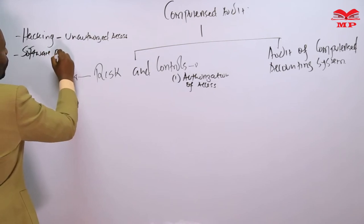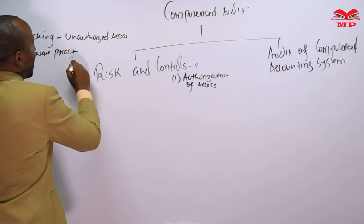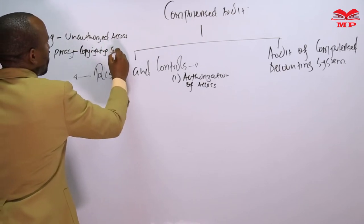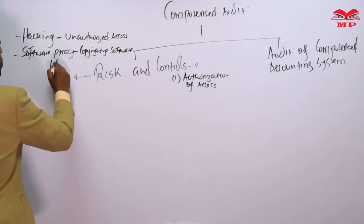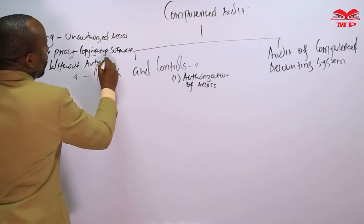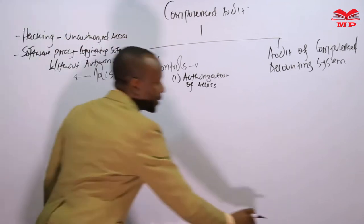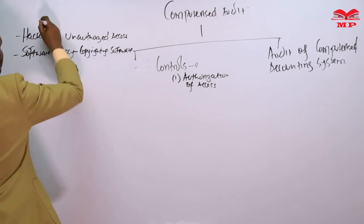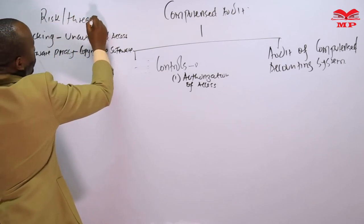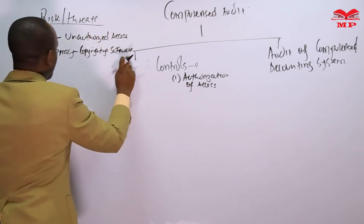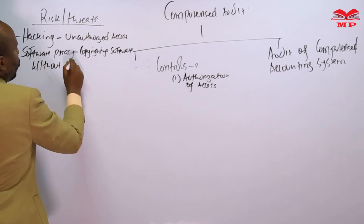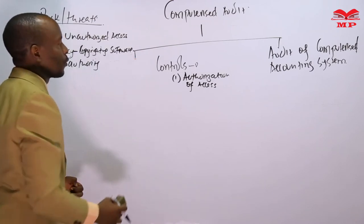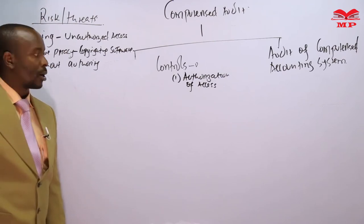Software piracy — you can also call it copying or unauthorized copying of software without proper authority. The original software used in programming is called the source code, so you are supposed to keep all your source codes under lock and key. Maintaining source code under lock and key becomes a control.